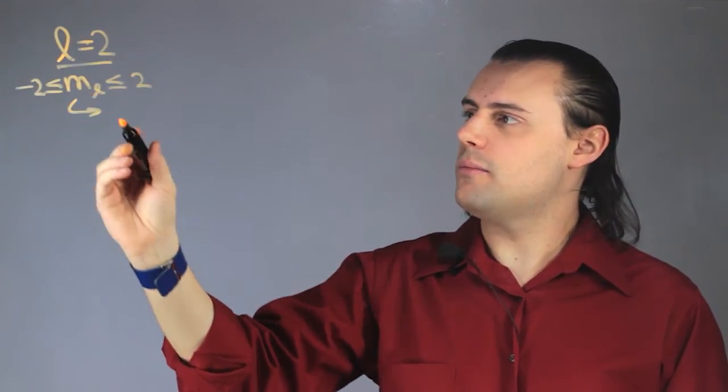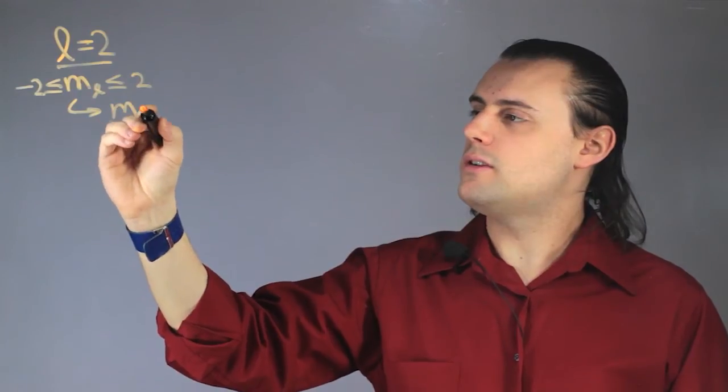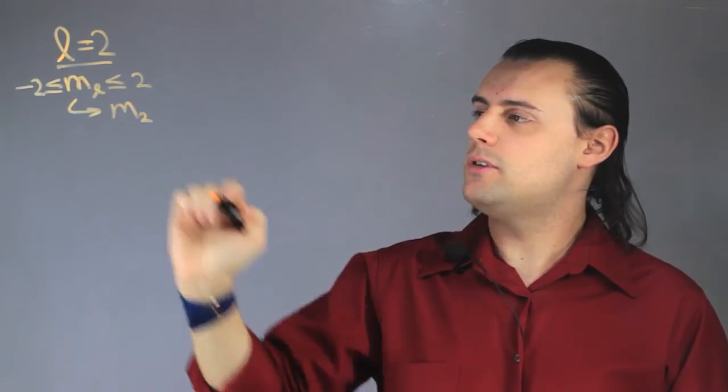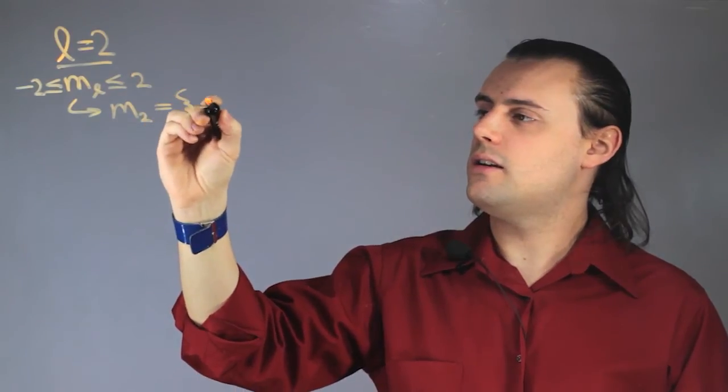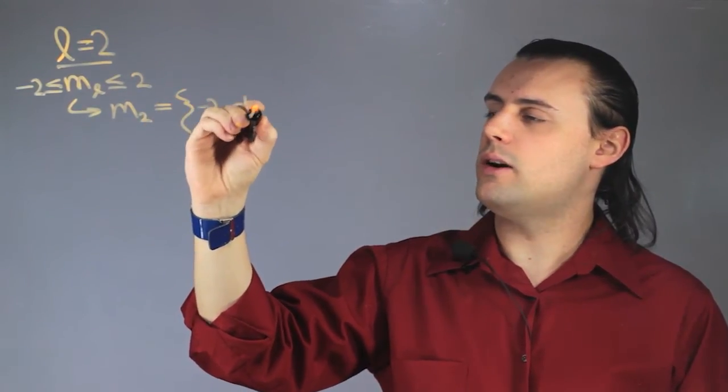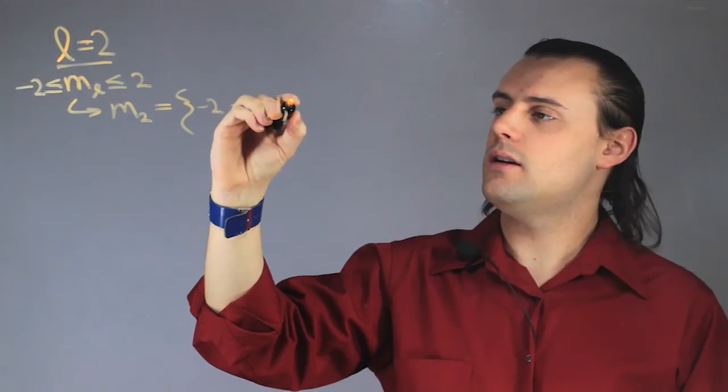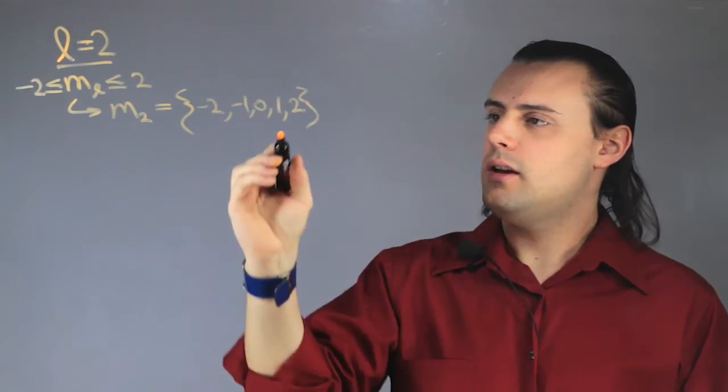So if we examine the magnetic number, we see that M sub 2 can be a number in the set negative 2, negative 1, 0, 1, or 2.